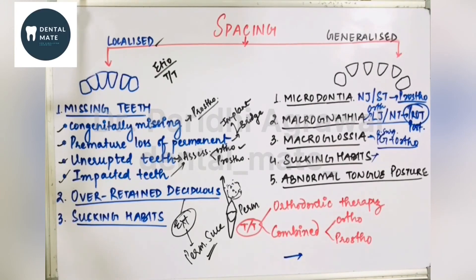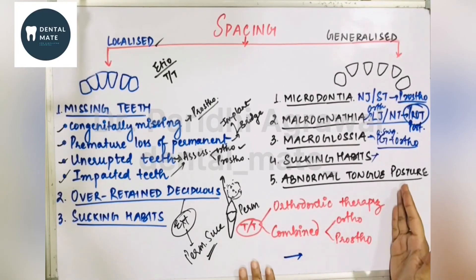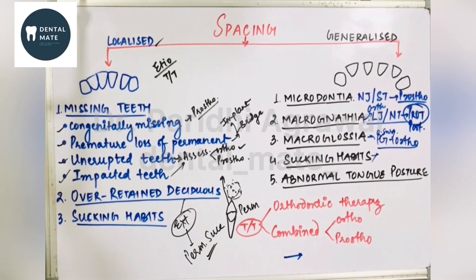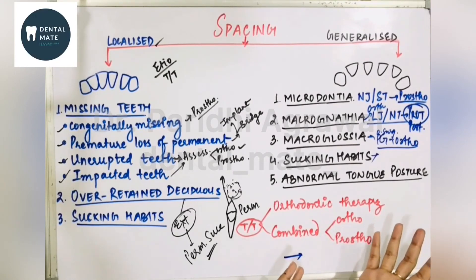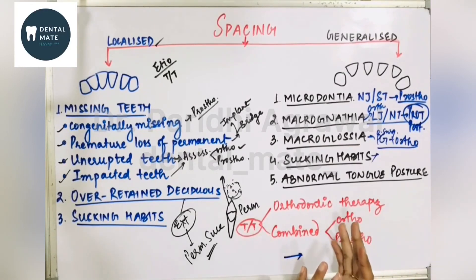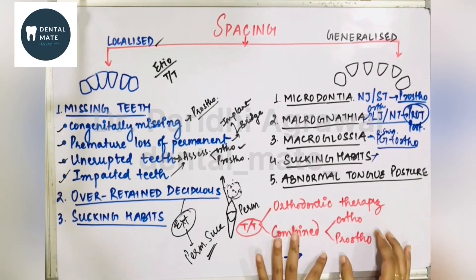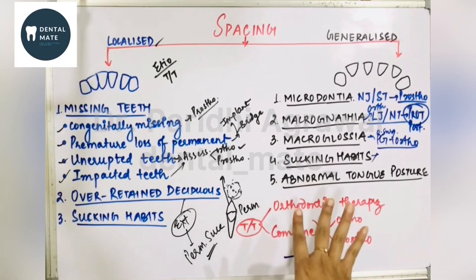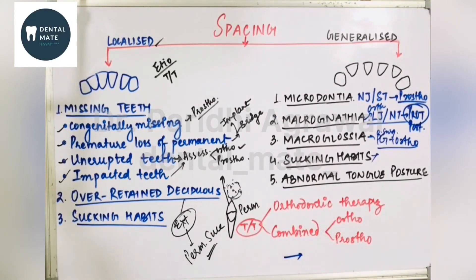The treatment plan for spacing can be either orthodontic therapy or combined orthodontic and prosthodontic therapy. In orthodontic therapy, various appliances can be used: habit-breaking appliances, Hawley's appliance, removable appliances with springs for localized spacing, or fixed orthodontic mechanotherapy. Prosthodontically, jacket crowns and composite build-ups can be done, and then space closure via orthodontic treatment. In the coming video, we will be talking about midline diastema — so stay tuned. Don't forget to like, comment, share, and subscribe. Thank you.